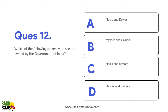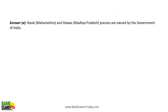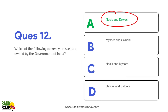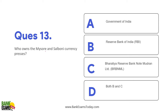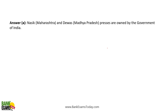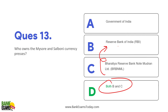Which currency presses are owned by RBI? Nasik and Devas presses are owned by the Government of India — not by RBI. Mysore and Salmoni currency presses are owned by Bharatiya Reserve Bank Note Mudran Limited, which is a wholly owned subsidiary of RBI. So Mysore and Salmoni are owned by RBI, while Nasik and Devas are owned by the Government of India.